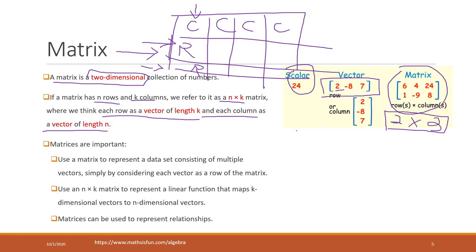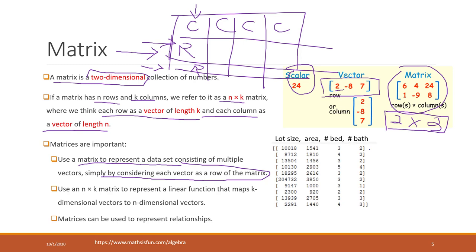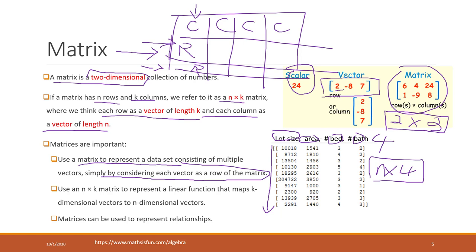We can use those vector calculations and other more complex calculations on relational database tables. For example, we can use a matrix to represent a dataset, considering each vector as a row. Looking at our house price table with four columns and multiple rows — we can consider that as an N-by-four matrix, and each single row as a vector in four-dimensional space.